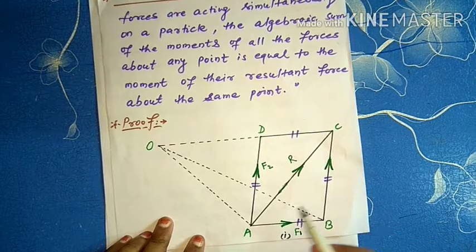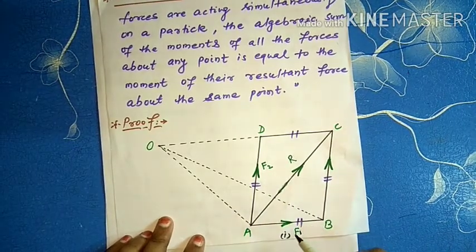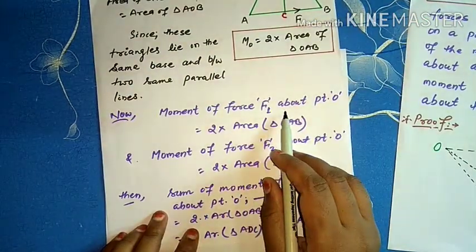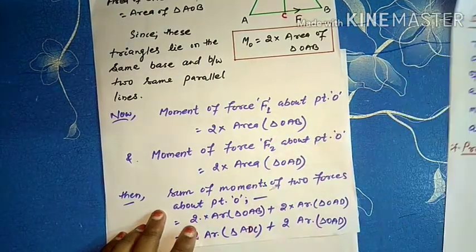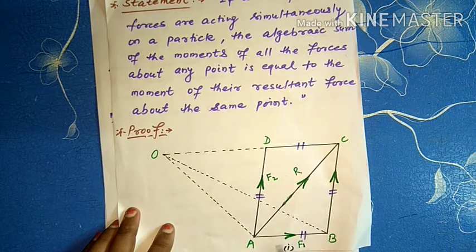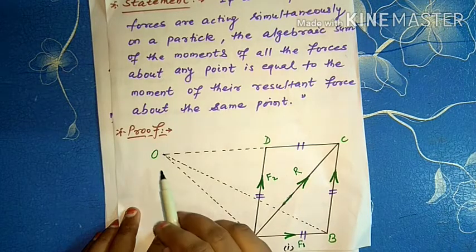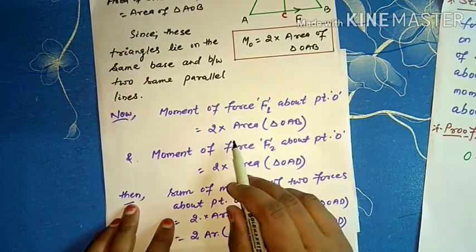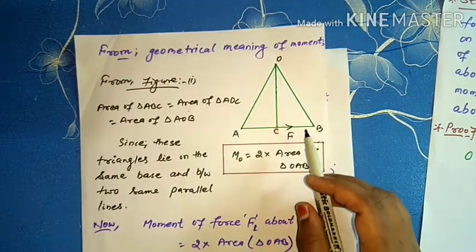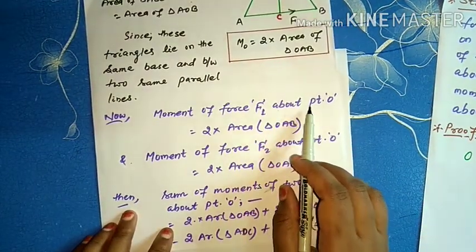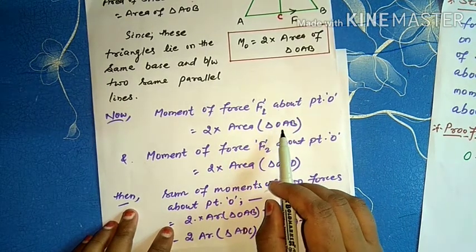Now we calculate the moment of forces F1 and F2 about point O. The moment of force F1 about point O — since F1 lies in triangle OAB, and from the geometrical meaning we know that the moment of F1 about point O equals 2 times the area of triangle OAB.